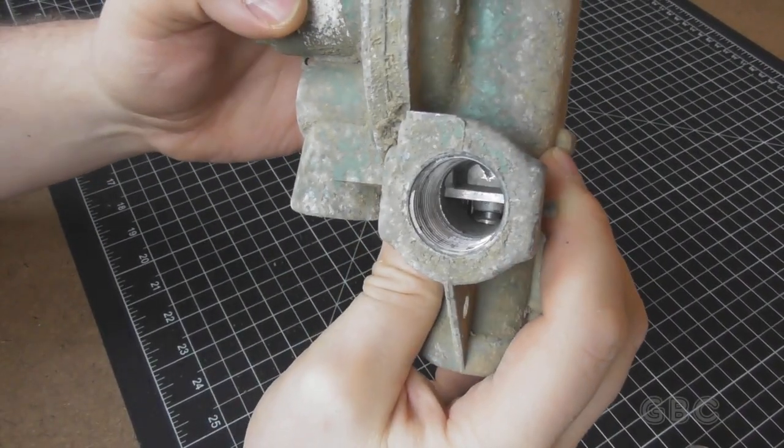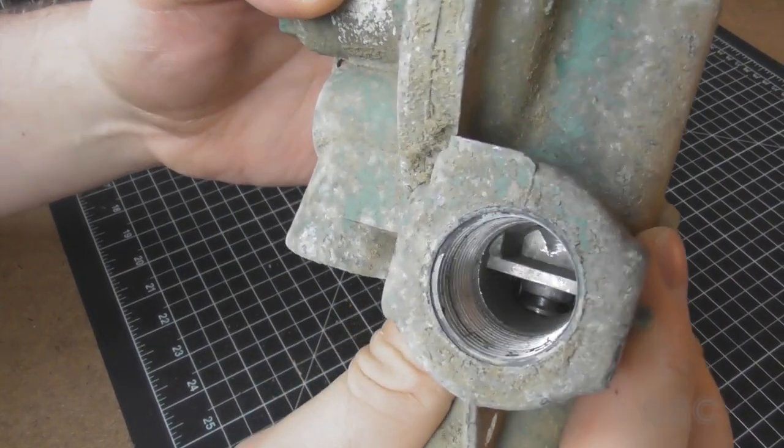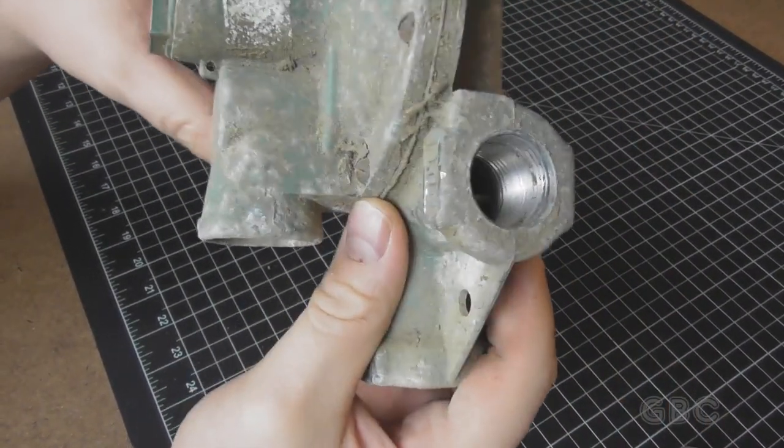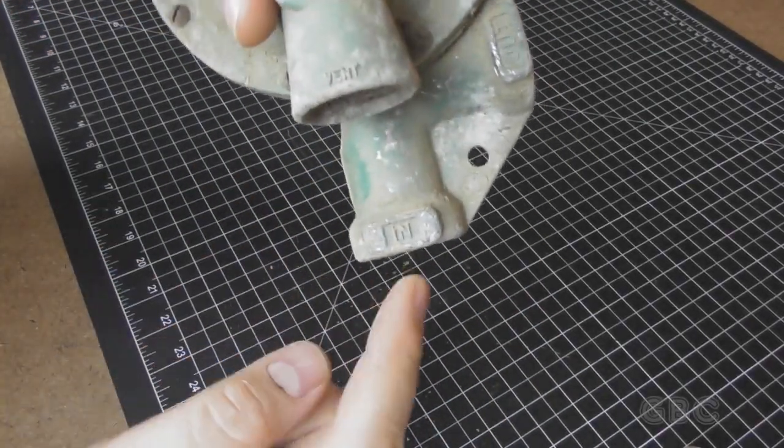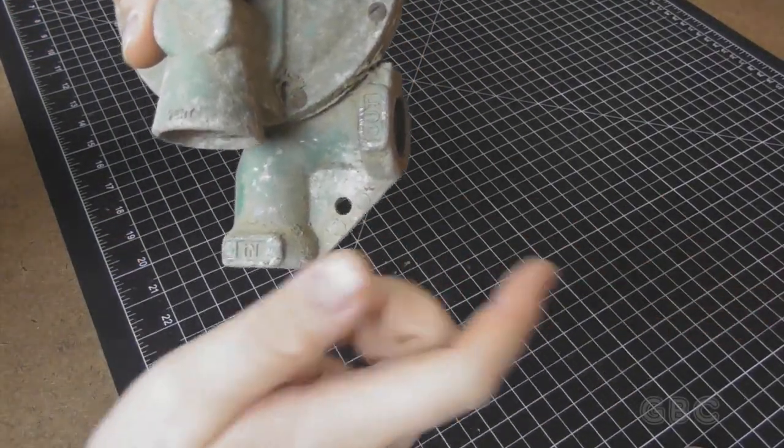Now this is the outlet port. We can kind of see in there. This port with the screen is the vent and the fuel goes in on the bottom.